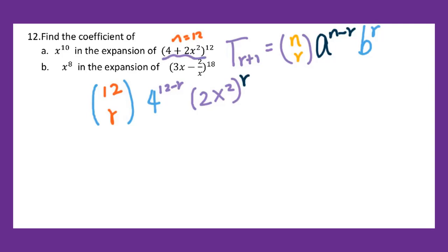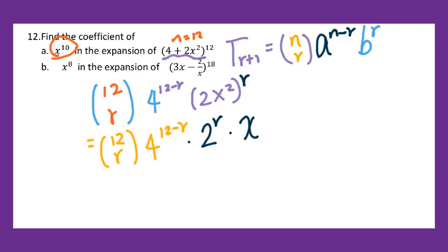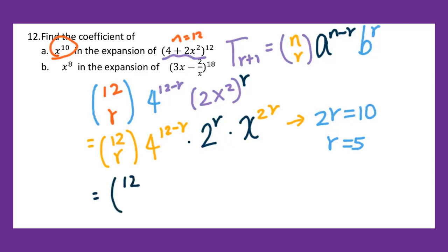Then simplify. We check when r equals what value we can get x to the tenth power. We get 12 taken r, times 4 to the 12 minus r power, times 2 to the r power, and x to the 2r power. Since we're looking for x to the tenth power, we set 2r equals 10, which means r equals 5. Therefore, plug in: 12 taken 5 times 4 to the 7th power — since 12 minus 5 is 7 — times 2 to the 5th power.